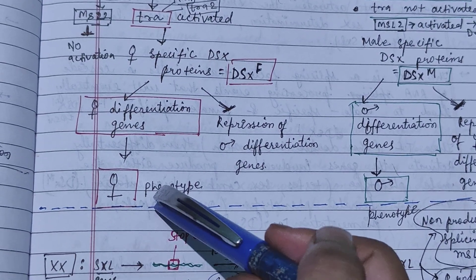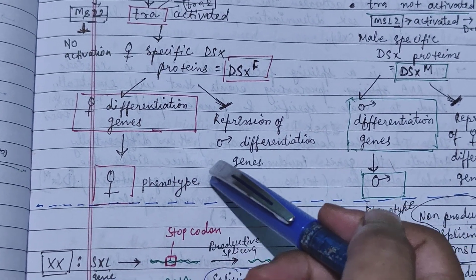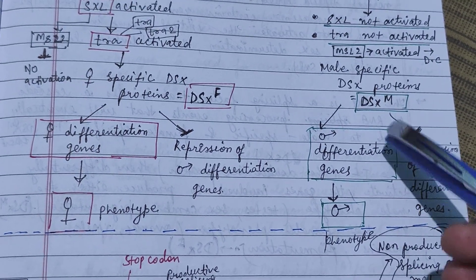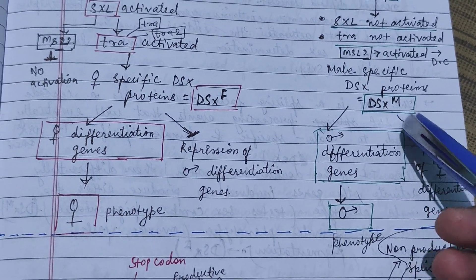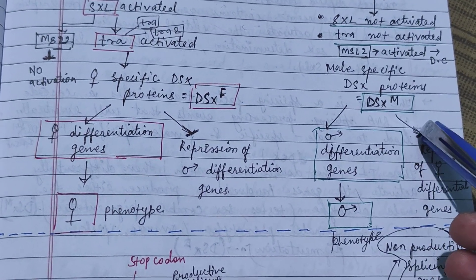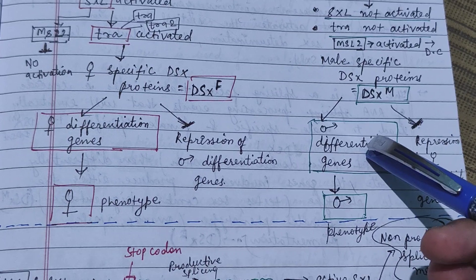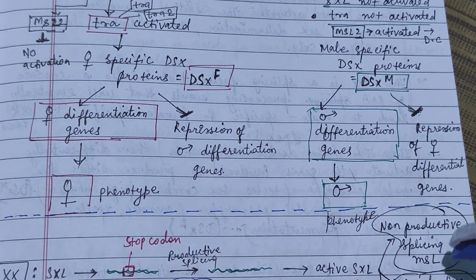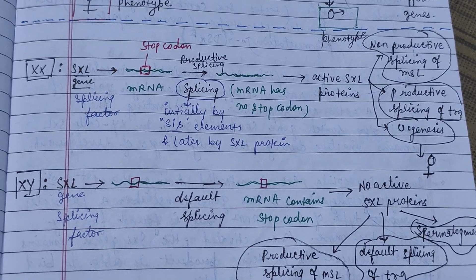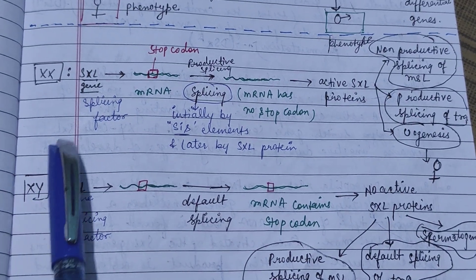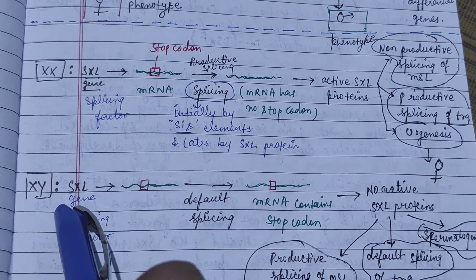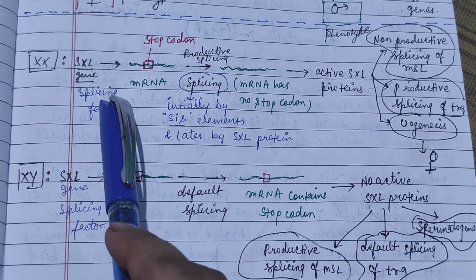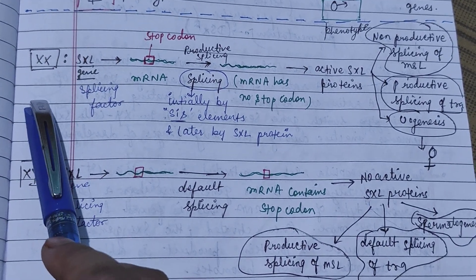DSXF leads to female differentiation genes, resulting in female phenotypic characters and repression of male differentiation genes. In the case of males, the DSX protein DSXM leads to male differentiation genes and repression of female differentiation genes. Here is another chart showing the female and male pathways, where the Sxl gene is activated in female and not activated in male.